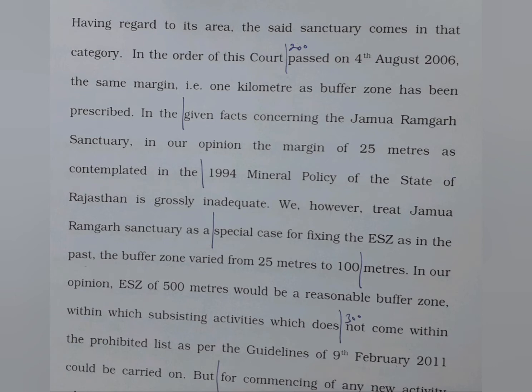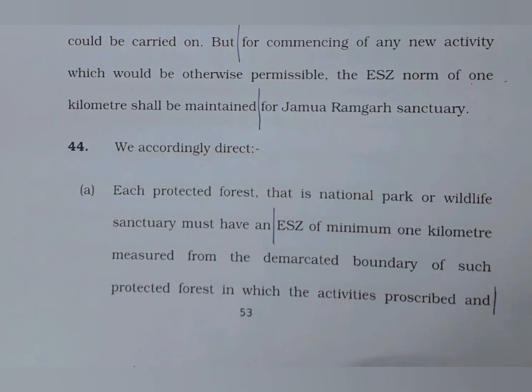We, however, treat Jammua Ramgad Sanctuary as a special case for fixing the ESZ, as in the past the buffer zone varied from 25 meters to 100 meters. In our opinion, ESZ of 500 meters would be a reasonable buffer zone within which subsisting activities which do not come within the prohibited list as per the guidelines of 9 February 2011 could be carried on. But for commencing of any new activity which would be otherwise permissible, the ESZ norm of 1 km shall be maintained for Jammua Ramgad Sanctuary.